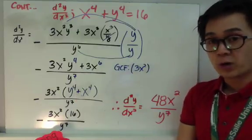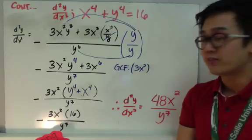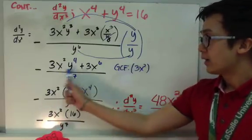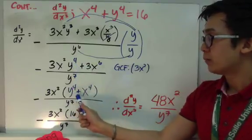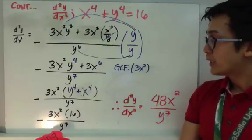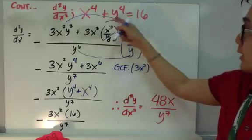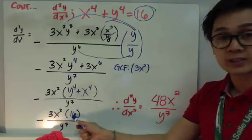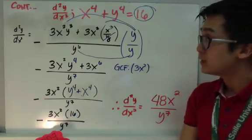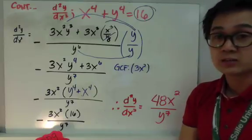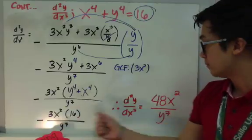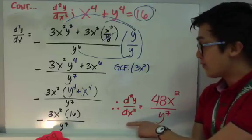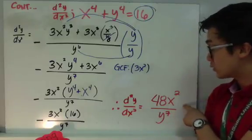The numerator is still not in simplest form. We pull out the greatest common factor, which is 3x², leaving y⁴ plus x⁴ inside the parentheses. We know that y⁴+x⁴=16 from our original equation, so we substitute 16 for that expression. Multiplying 3 times 16 gives 48. Therefore, the second derivative of the function is 48x²/y⁷.